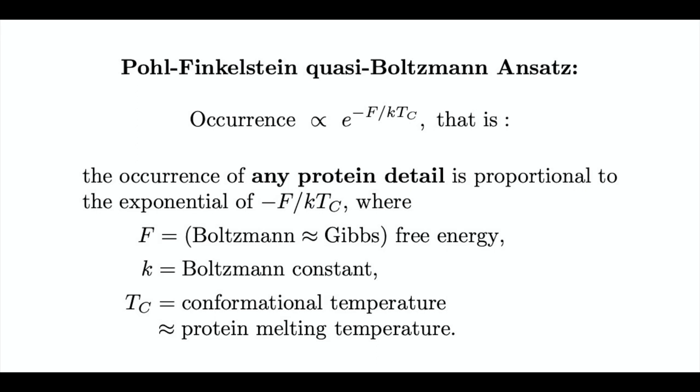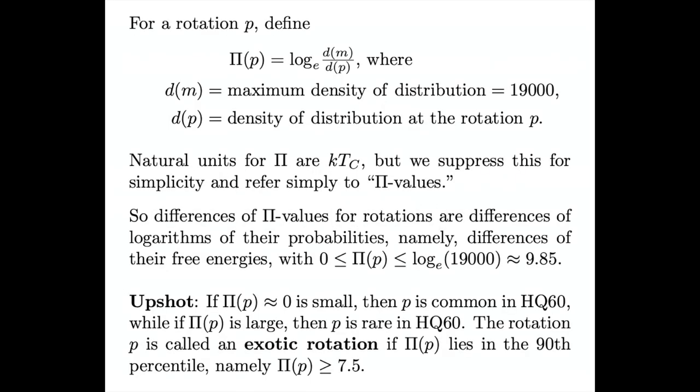Let us emphasize, the input to the method is any PDB file and the output is an estimate of the free energy of the protein feature associated with its BHBs based upon the a priori distribution derived from the database HQ60. Specifically, we define pi of P to be the logarithm of D of M over D of P, where D of M is the maximum density 19,000 over the entire HQ60 distribution, and DP is the density at the subject rotation P. Notice that the natural units for pi are in terms of 1KTC. Usually only differences of free energies can be computed in this manner, but we shall argue that these pi values can be taken as absolute approximations across different peptides in different proteins.